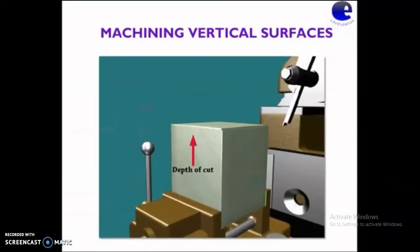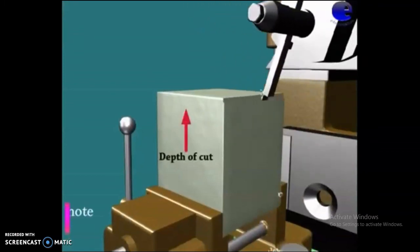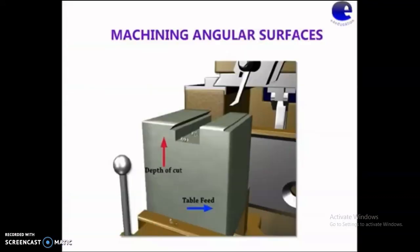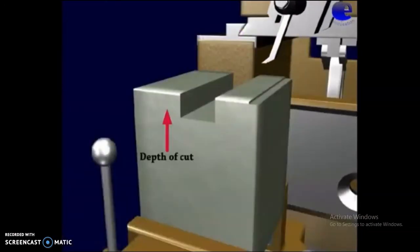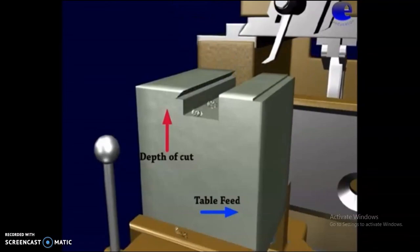Now machining vertical surfaces. Let us see how vertical surfaces are machined using a shaping machine. Here we are giving depth of cut by elevating the workpiece. Now machining angular surfaces. Here both the depth of cut and table feed are applied simultaneously. This is how angular surfaces are made.